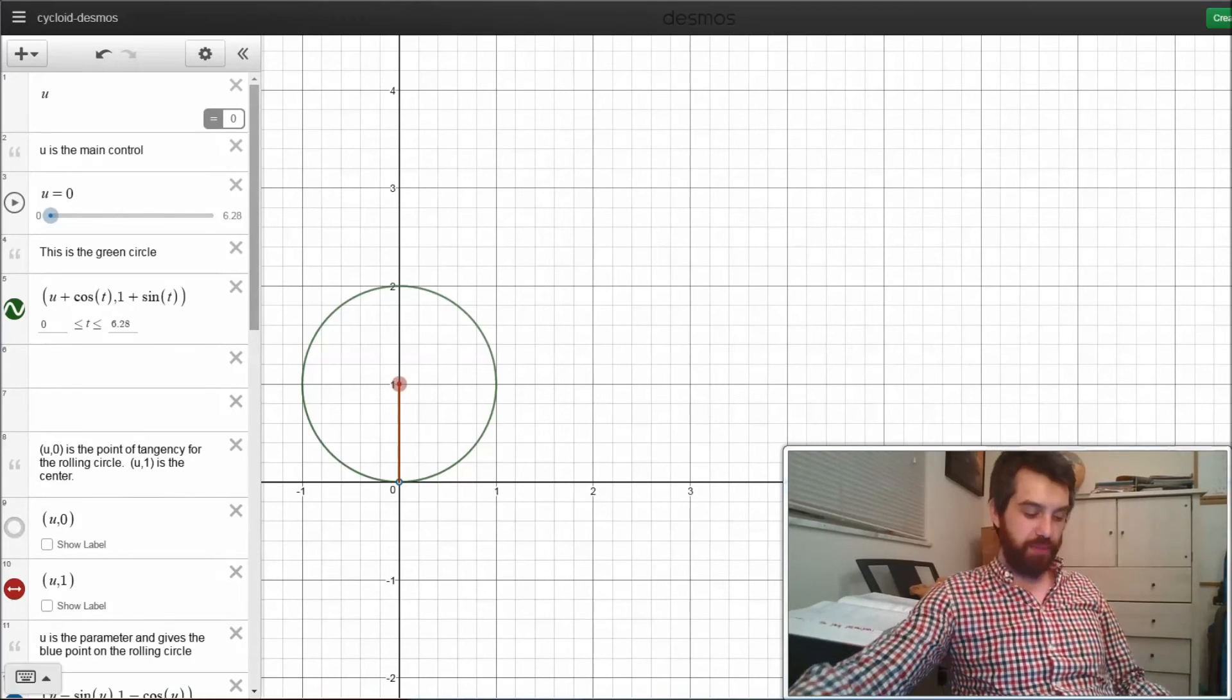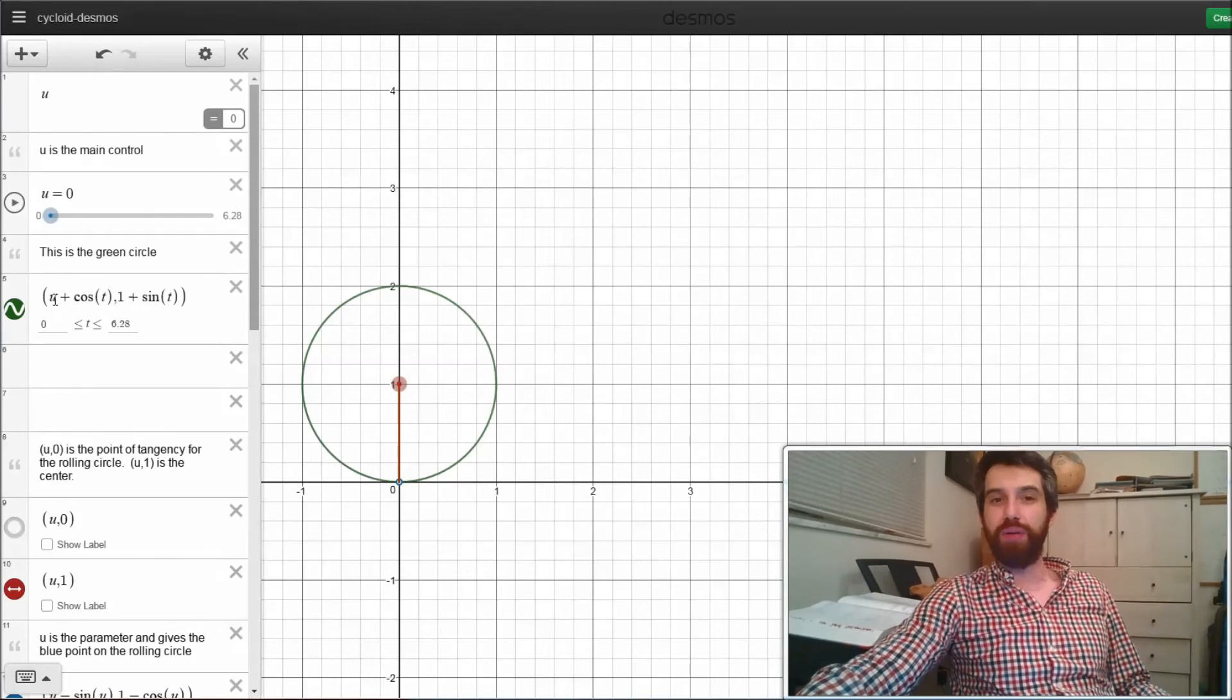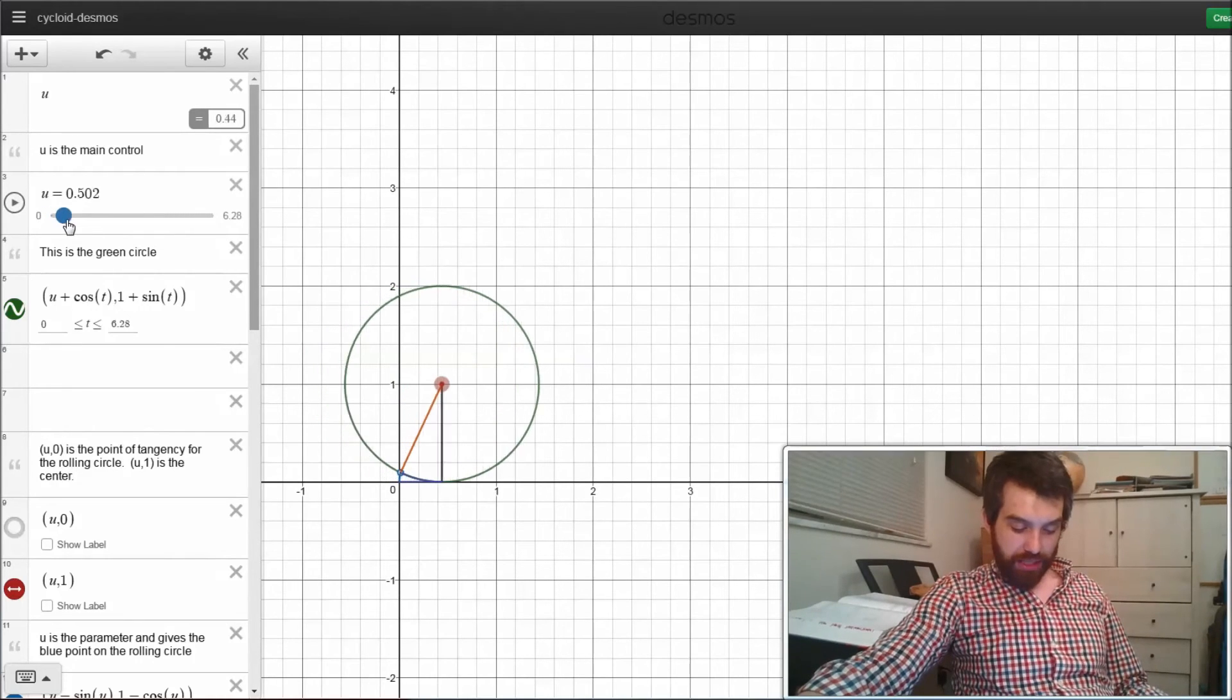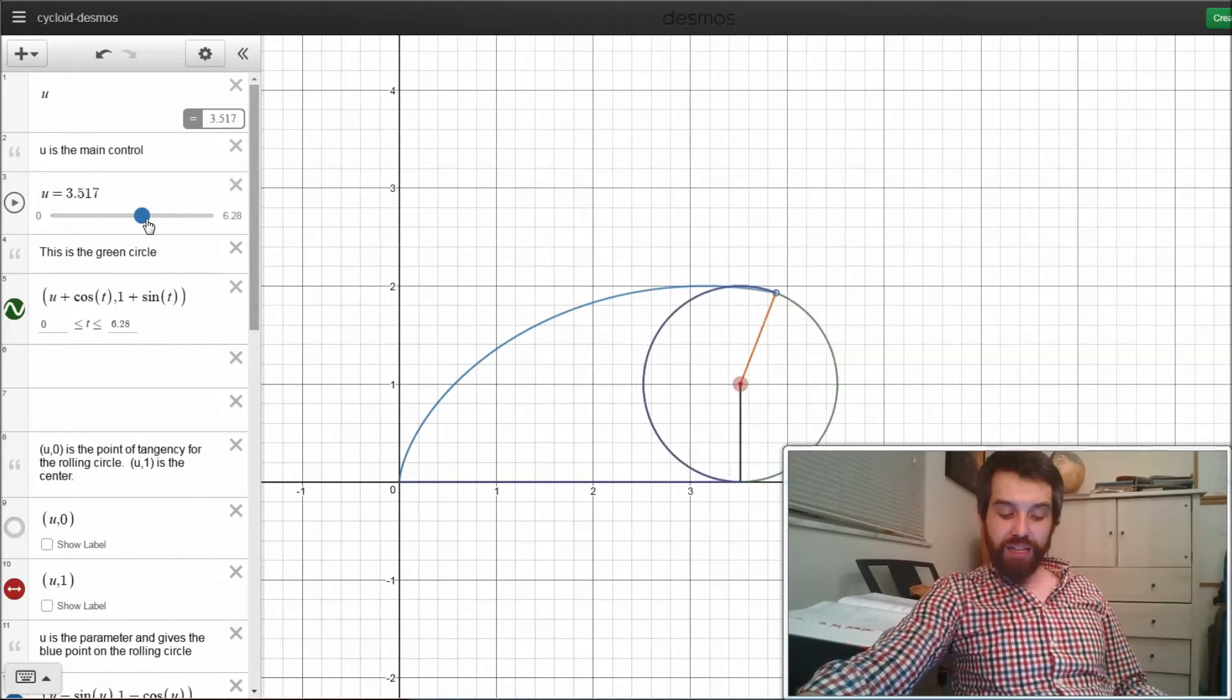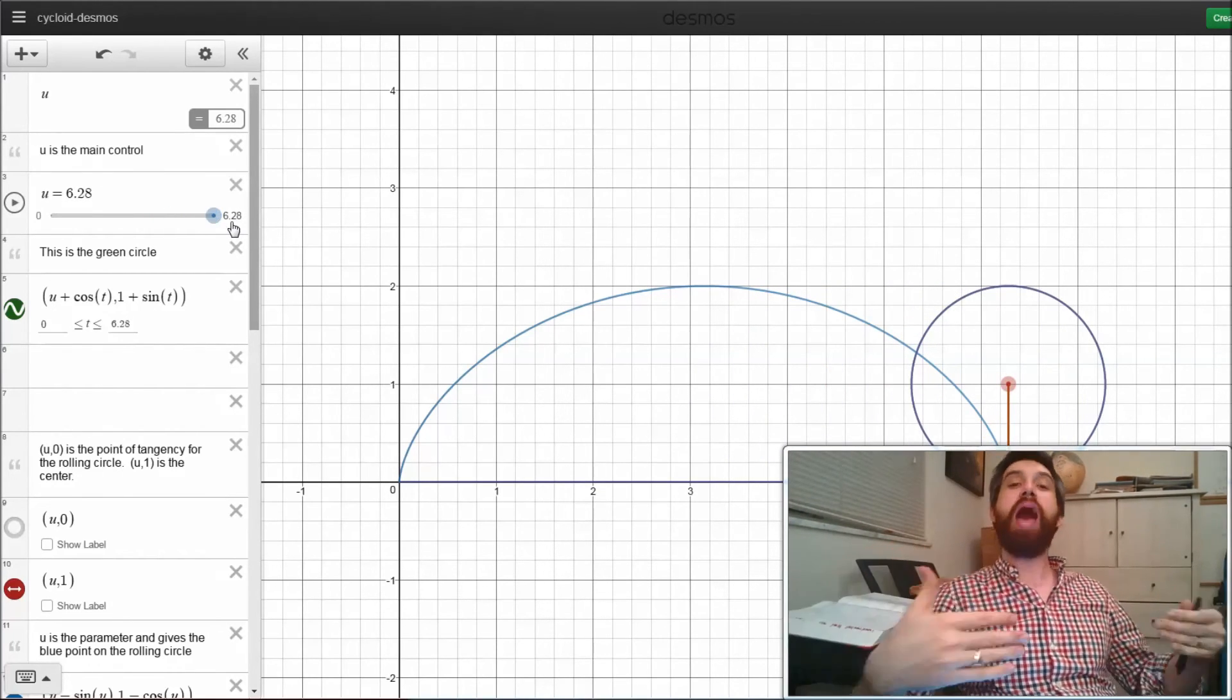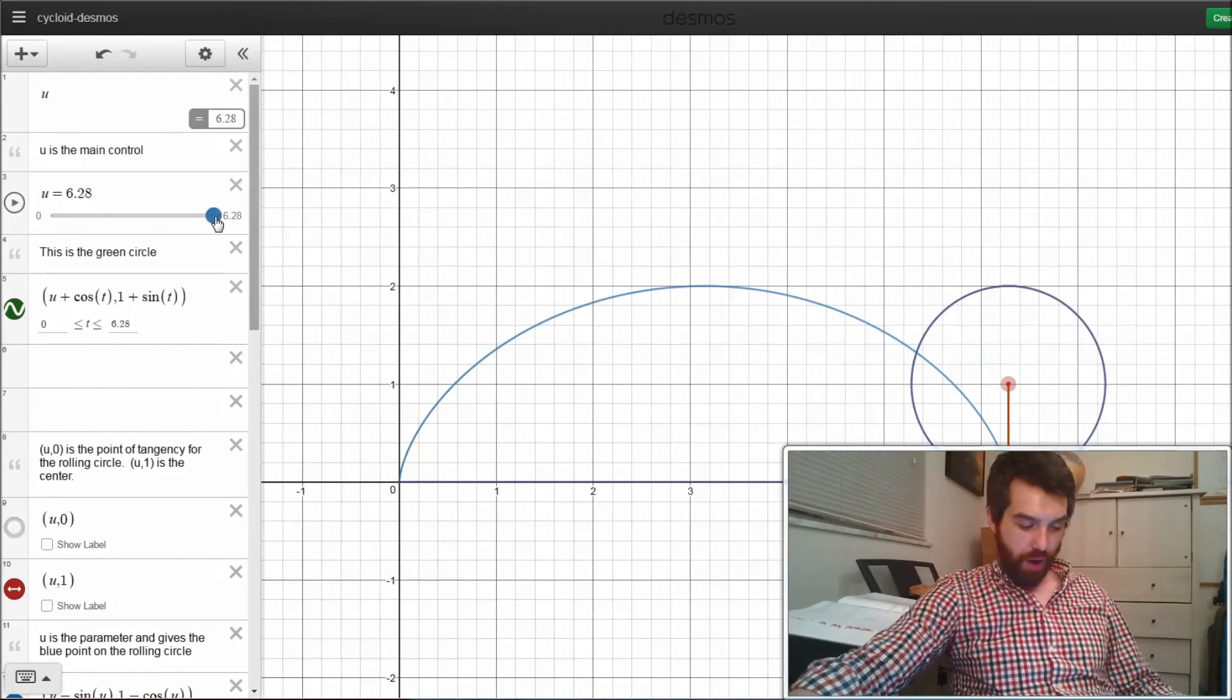Now watch what happens in this particular Desmos package. I have a little slider bar u here and you can sort of see down in the code that it describes u plus cosine of t. So I can graph what happens for every specific value of t here. So I'm going to slide my u along. And what's happening is it's like I'm trying to draw out the edge of that circle, but I'm keeping track of my points and as my t values get larger and larger and larger, it forms out that particular curve.